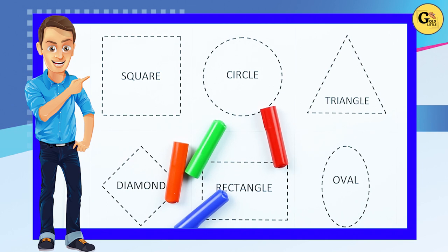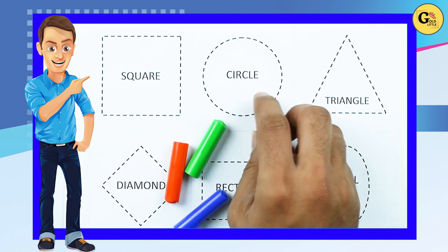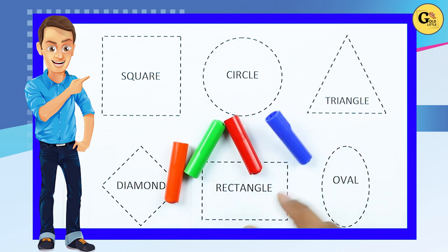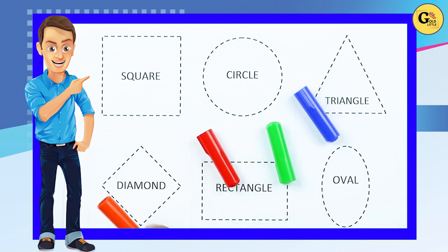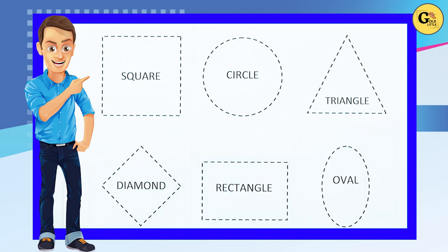Hello friends, today we learn shapes: square, circle, triangle, diamond, rectangle, oval with colors: red color, blue color, orange color, green color. Let's start.